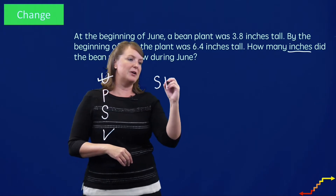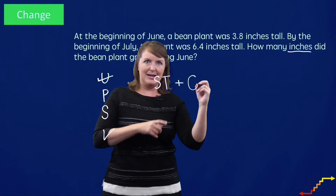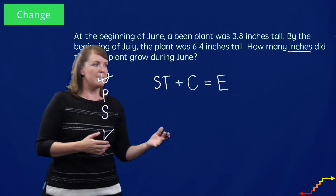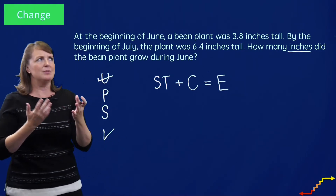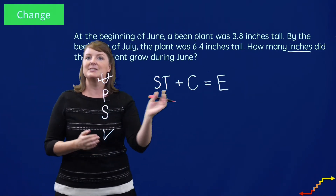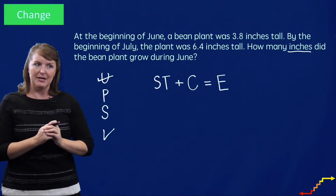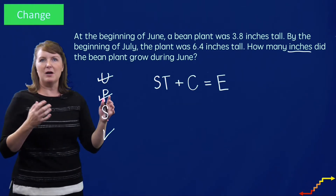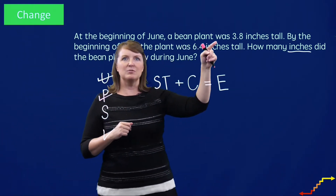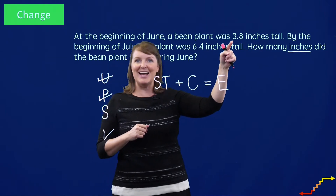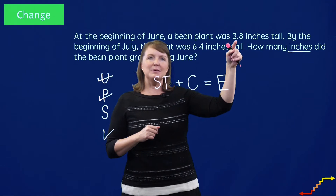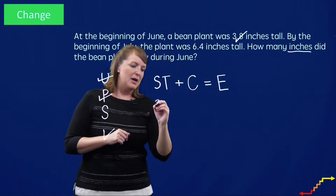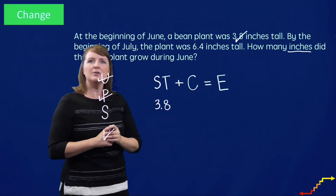Let's use our change graphic organizer. Because the bean plant is growing, it's increasing in height, so I'm going to use a plus sign. If the bean plant was shrinking, I would use a minus sign to show the decrease in height. We've got our plan, now let's set up and solve this problem. At the beginning of June, the bean plant was 3 and 8 tenths inches tall — that tells me the start amount. I'll check that off and write 3 and 8 tenths under the start amount.